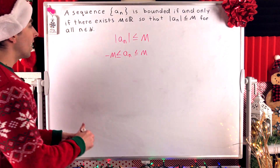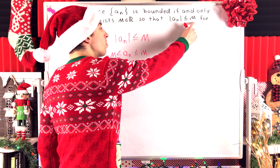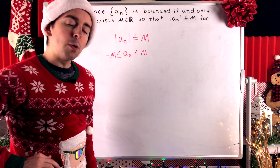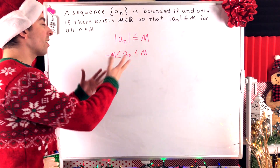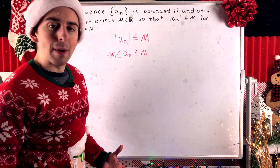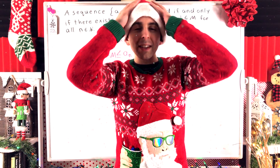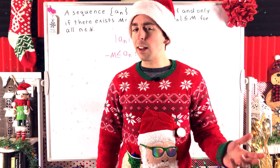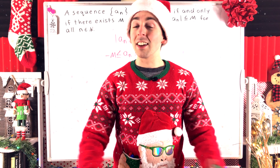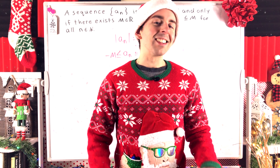So indeed, a sequence is bounded if and only if there exists some real number that's greater than or equal to the absolute value of every term in the sequence. This gives us a nice equivalent definition of what it means for a sequence to be bounded. I hope this video helped — let me know in the comments if you have any questions, need anything clarified, or have any other video requests. Thank you very much for watching, and be sure to subscribe for the jolliest math lessons on the internet.